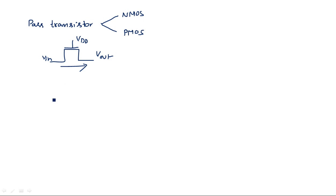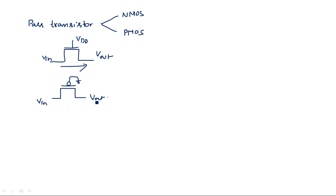Coming to the PMOS transistor — as we know, a PMOS transistor will switch on when we give a logic 0 input. The output equals 0 when the transistor is in the off state, meaning when we are giving VDD. Output equals Vin when the gate terminal is connected to ground.